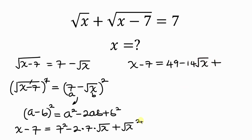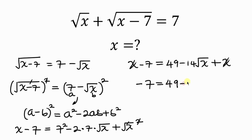The square cancels the square root, leaving behind x. Notice that we have x on the left-hand side and also x on the right, which can cancel out, leaving behind negative 7 on the left equal to 49 minus 14 root x.